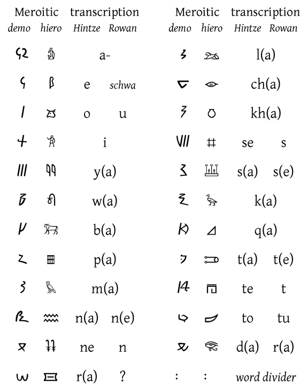The Meroitic script refers to two alphasyllabaric scripts developed to write the Kushite language at the beginning of the Meroitic period of the Kingdom of Kush. The two scripts are Meroitic cursive, derived from Demotic Egyptian, and Meroitic hieroglyphics, derived from Egyptian hieroglyphs.